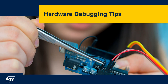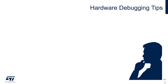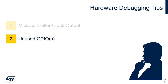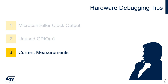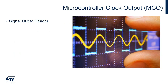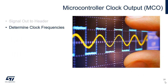Let's move on to the next portion of this presentation: the hardware debugging tips. I would like to share three hardware debugging tips and tricks with you. First, we will discuss the microcontroller clock output, then move on to utilizing any free GPIOs, and lastly, the benefits of taking current measurements. It is highly recommended to bring the microcontroller clock output signal, or MCO, out to a header pin. By doing so, it can be very helpful in determining your selected clock frequencies when debugging.